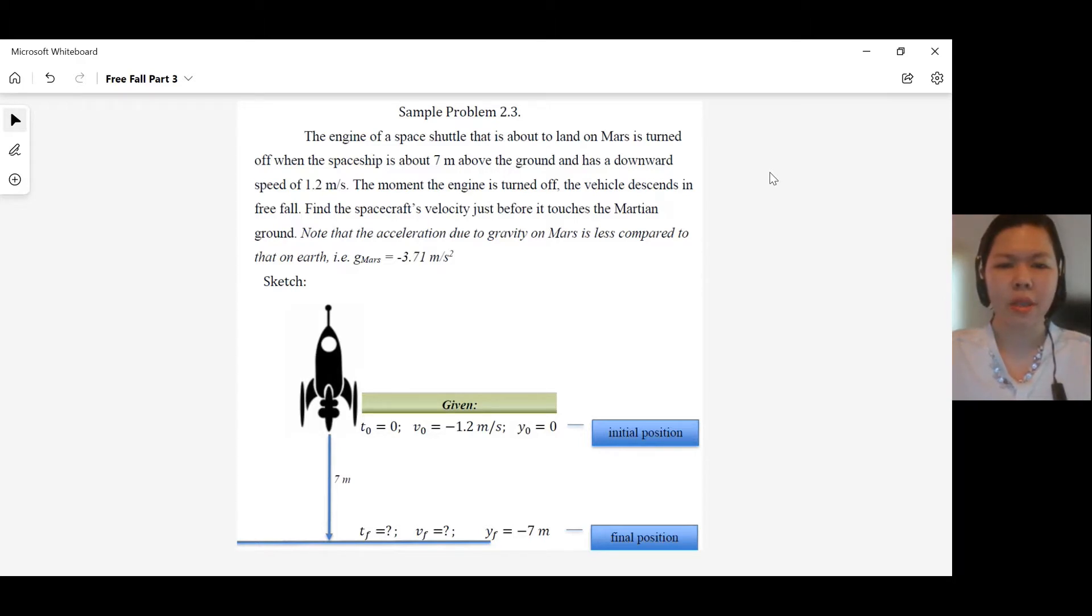Note that the acceleration due to gravity on Mars is less compared to that on Earth. We have G on Mars is negative 3.71 meters per second squared. We have here the sketch.